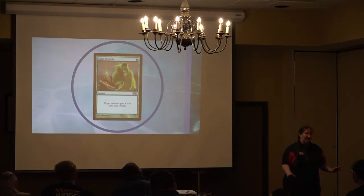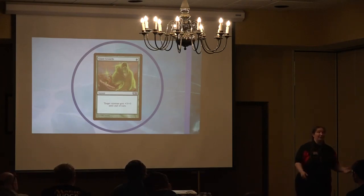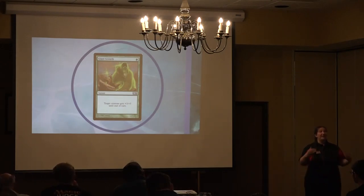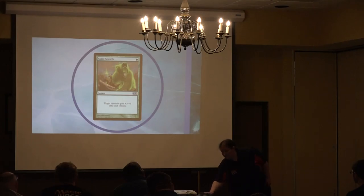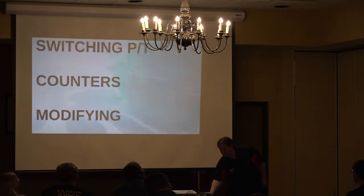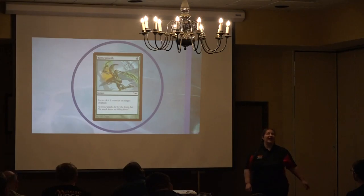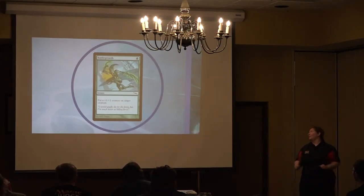Then we have our modifying layer. Giant Growth: target creature gets +3/+3 until end of turn. There are other modifying effects that may last longer than until end of turn — 'creatures you control get +1/+1' or 'creature tokens you control get +1/+1 and have vigilance.' The +1/+1 part is going to apply in the modifying layer.